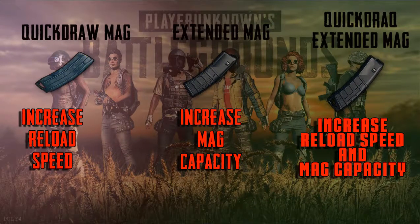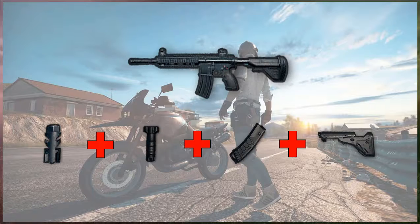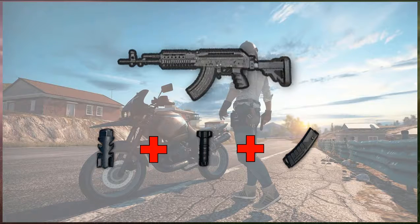Mag attachments include quick draw, extended, and quick draw extended mag. For my recommendations: use the AKM with quick draw extended mag and a compensator. Use the M416 with a compensator, vertical foregrip, quick draw extended mag, and tactical stock. Use the M762 with a compensator, vertical foregrip, and extended quick draw mag.